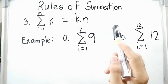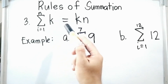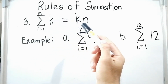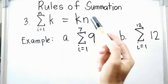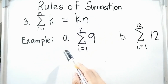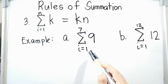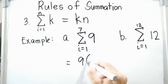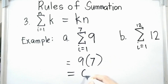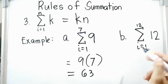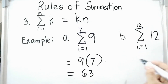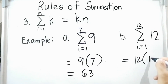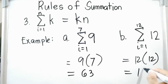Rule number 3: the summation of a constant is simply n times the constant. For example (a), the summation of 9 where i equals 1 and n equals 7 equals 9 times 7, which is 63. For letter (b), the summation of 12 where i equals 1 and n equals 12 equals 12 times 12, which is 144.